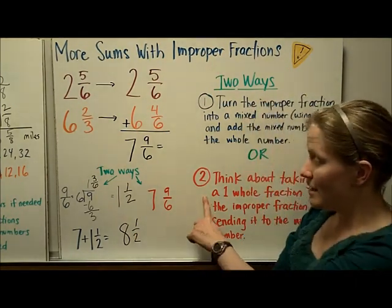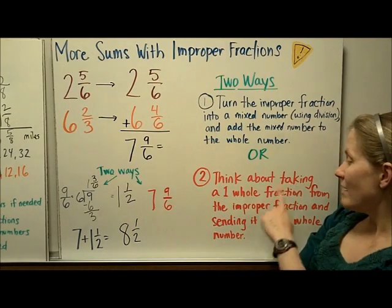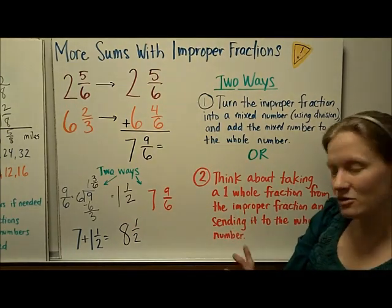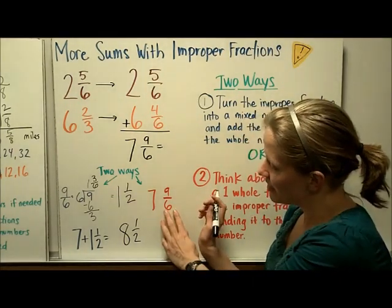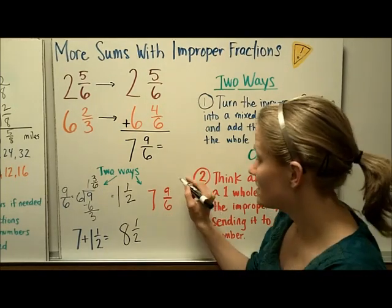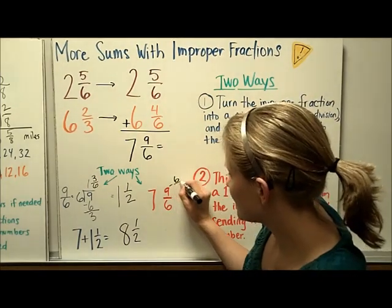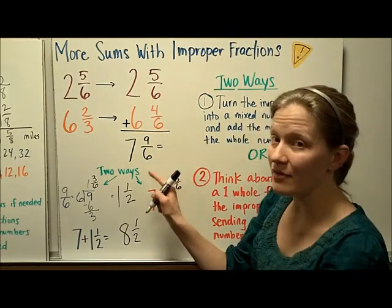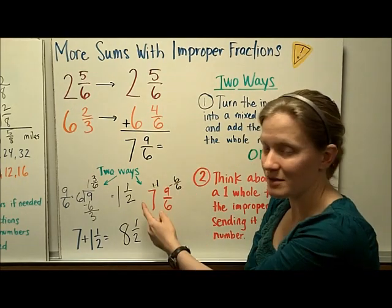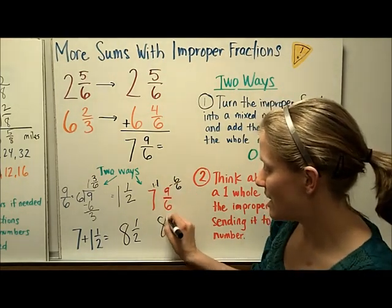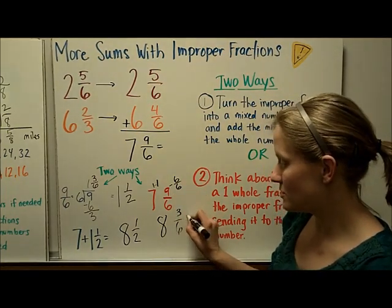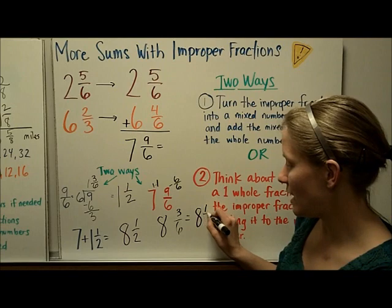Another way to think about it is the second way. Think about taking a 1 whole fraction from the improper fraction and sending it to the whole number. So I'm going to think about pulling out 1 whole. And in this case, since our fraction is broken up into 6, the 1 whole would be 6/6. So I'm going to pull out that 6/6 and send it over here to the 1 whole fraction. Taking it away from here and sending it over here. So my whole number now becomes 8, 9/6 minus 6/6 is 3/6 or simplified to 8 and 1/2.